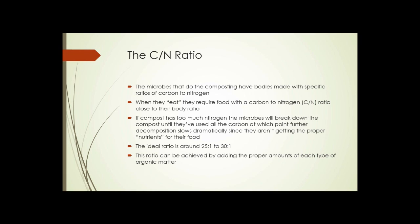It's because of something called the CN or carbon-nitrogen ratio. The microbes that do the composting have bodies made with specific ratios of carbon to nitrogen. All bacteria of that species has the same ratio of carbon and nitrogen in the cell. So when they start decomposing the organic matter, they require food that has a carbon to nitrogen ratio that's close to the ratio in their body.